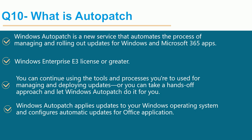Windows Autopatch is not mandatory in Intune — you can continue using update ring deployments or use Autopatch as well. Windows Autopatch applies updates to your Windows operating system and also configures automatic updates for Office applications. This is an additional option to deploy patches instead of using update rings in Intune. Thank you guys for watching this video — see you soon in my next video.